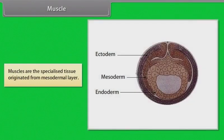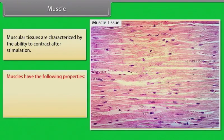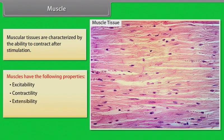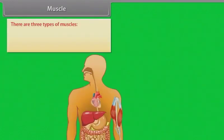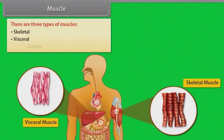Muscle. Muscles are specialized tissues originated from the mesodermal layer. Muscular tissues are characterized by the ability to contract after stimulation. Muscles have the following properties: excitability, contractility, extensibility, and elasticity. There are three types of muscles: skeletal, visceral, and cardiac.